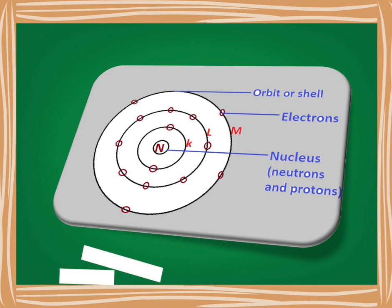The number of electrons in each shell is determined using the formula 2N², where N is the number assigned to each shell. For the K-shell, N = 1, so 2 × 1² = 2 electrons. For the L-shell, N = 2, so 2 × 2² = 8 electrons. For the M-shell, N = 3, so 2 × 3² = 18 electrons.